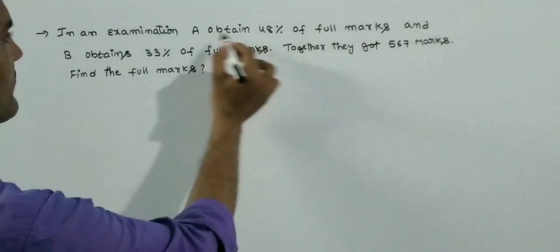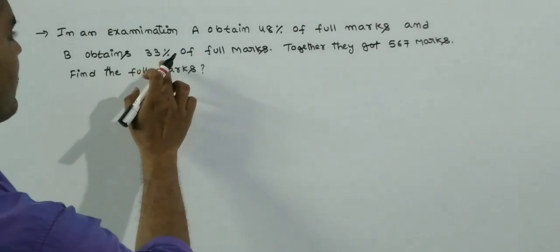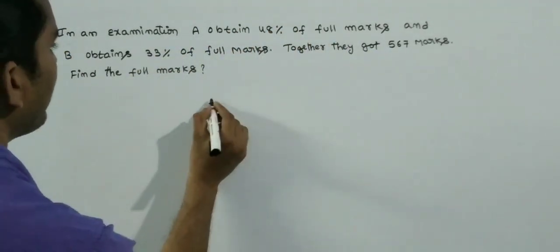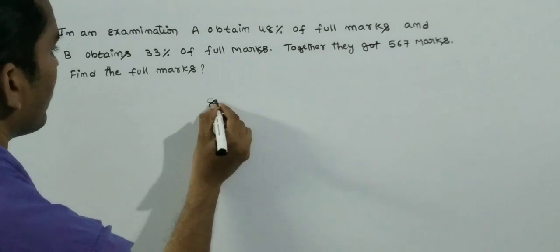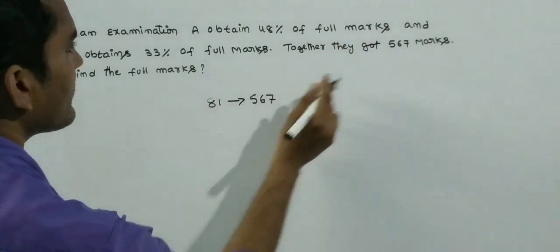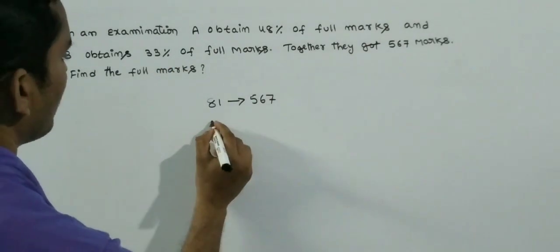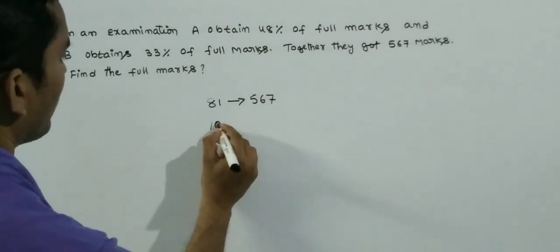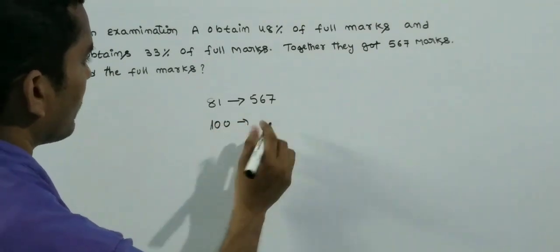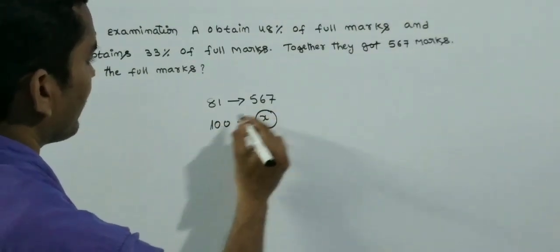A obtains 48% and B obtains 33%, and both together equal 567. That means 81% is equal to 567 marks. We don't know the full marks, so we assume it as X.